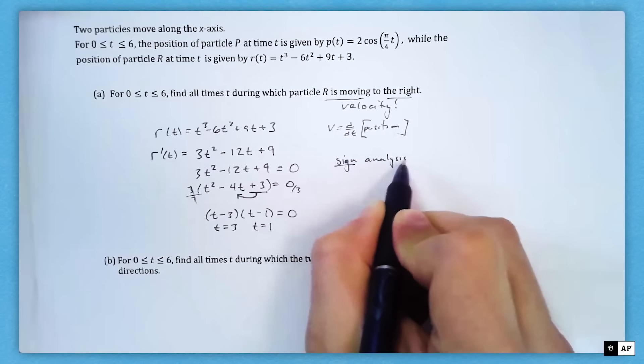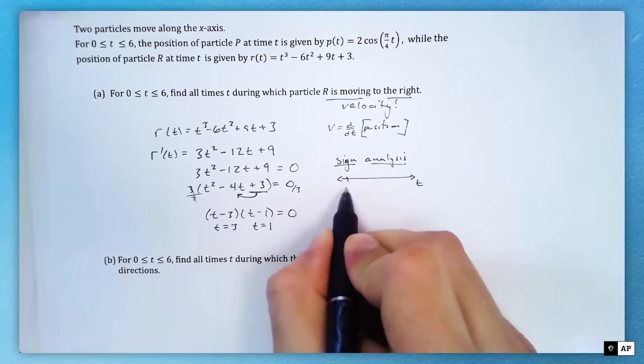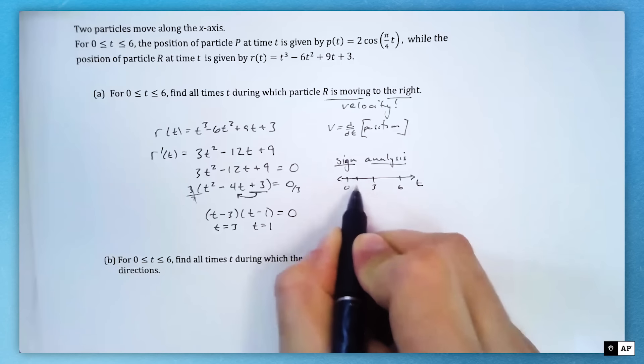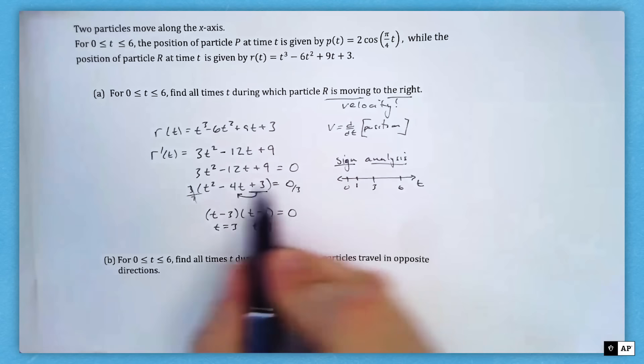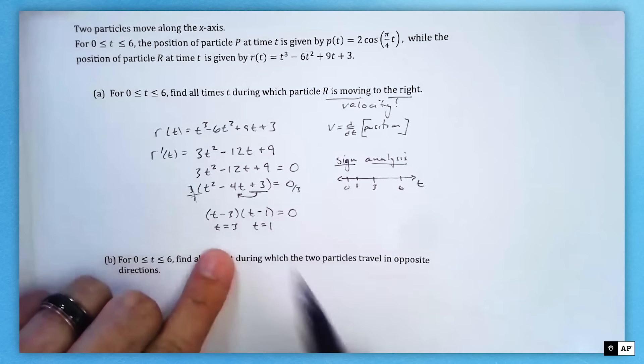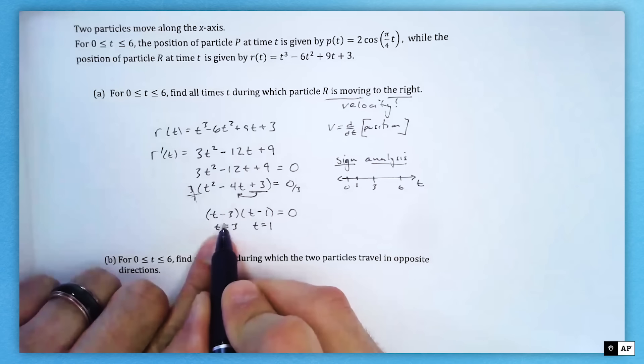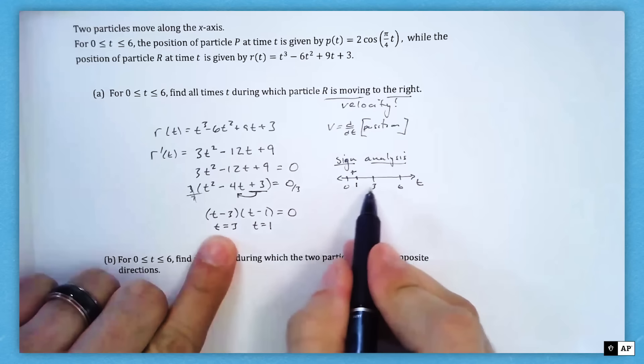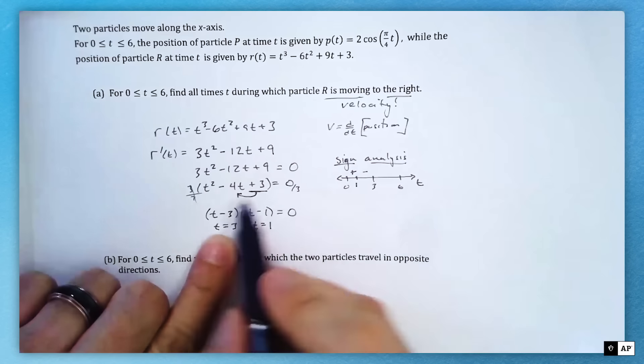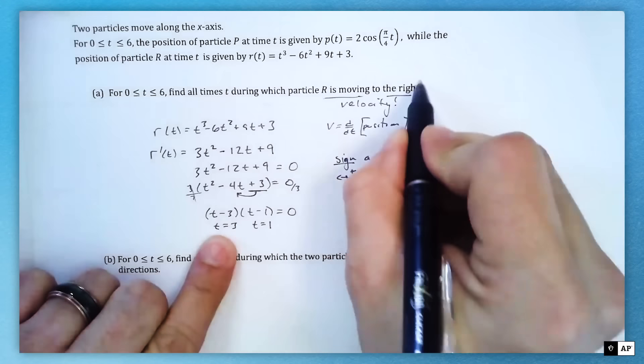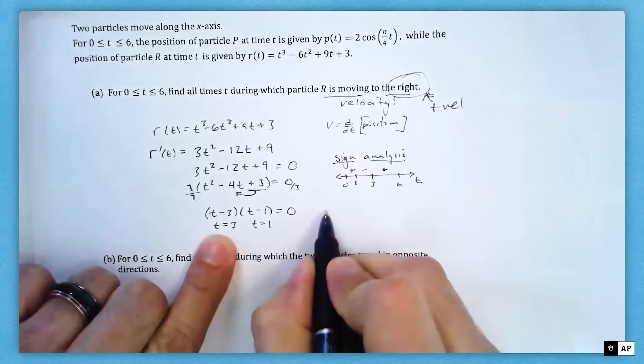I still haven't answered where it's moving right, so I'm going to do a little sign analysis. This is time t, 0 to 6. Three is about halfway, exactly, and one's over there, a third of the way to three. You can plug into these. I like plugging into the factored form. If I plug in numbers between 0 and 1, I'm going to get a negative and a negative, so that's positive. Between 1 and 3, like if I plug 2 in, I'm going to get a negative and a positive, which would be negative. For numbers bigger than 3, we'll get positive and positive.